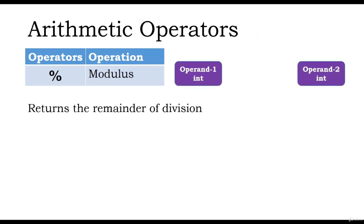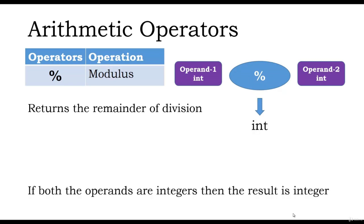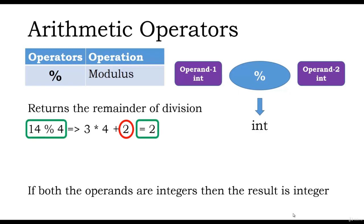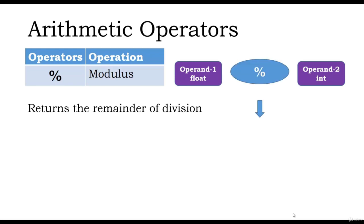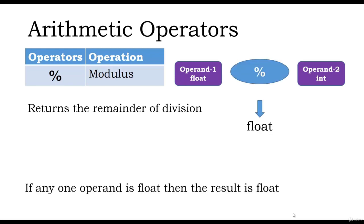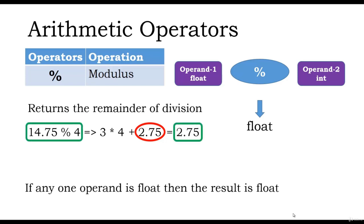We can perform modulus operations which returns the remainder of the division. Even in modulus operation, if both the operands are integers, the result is an integer. For example, we have 14 modulus 4, which evaluates to 3 multiplied by 4, which is 12, plus 2, giving us 14. So the remainder is 2. Therefore, the result of 14 modulus 4 is 2. The operands can also be a float value. For example, 14.75 modulus 4 evaluates to 12 plus 2.75, giving 14.75, so the remainder is 2.75. Therefore, 14.75 modulus 4 is 2.75.